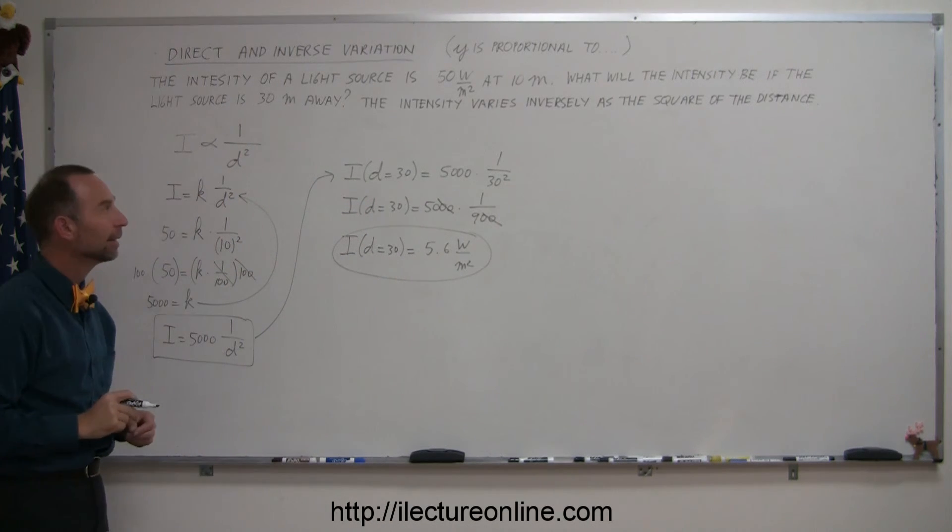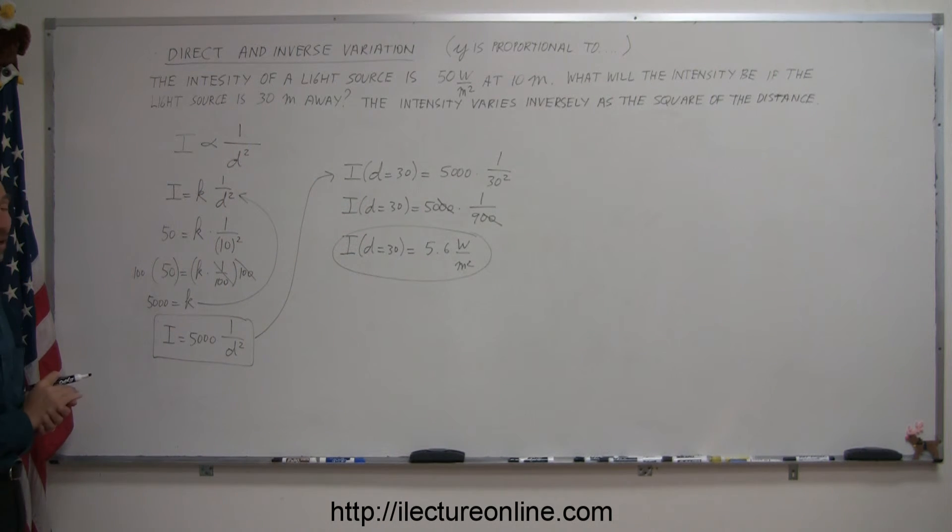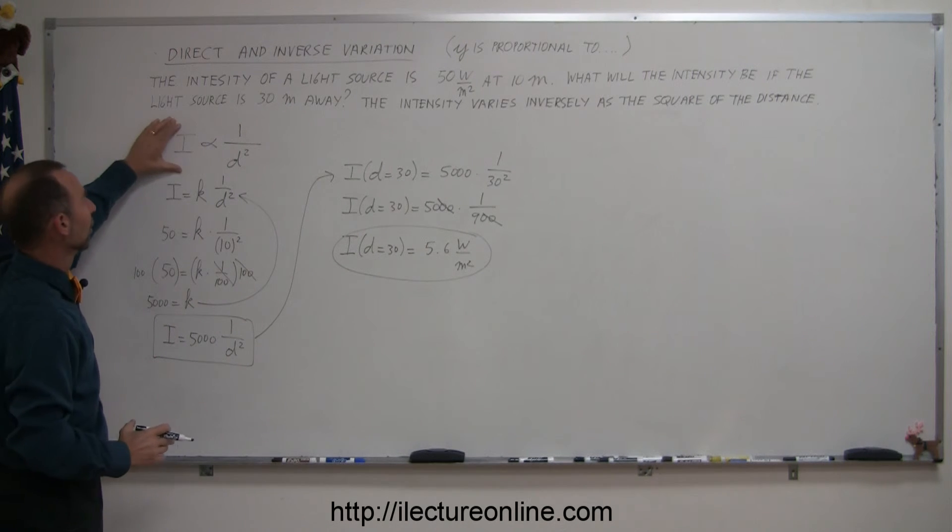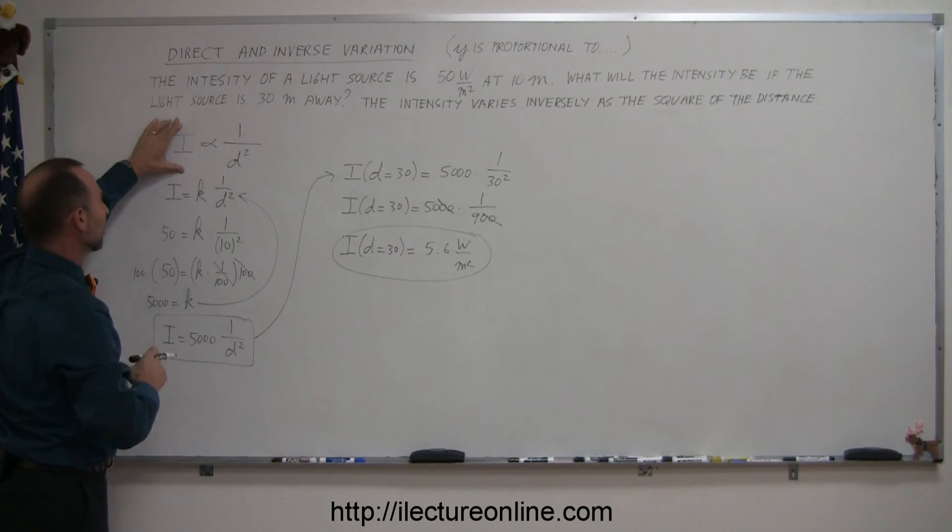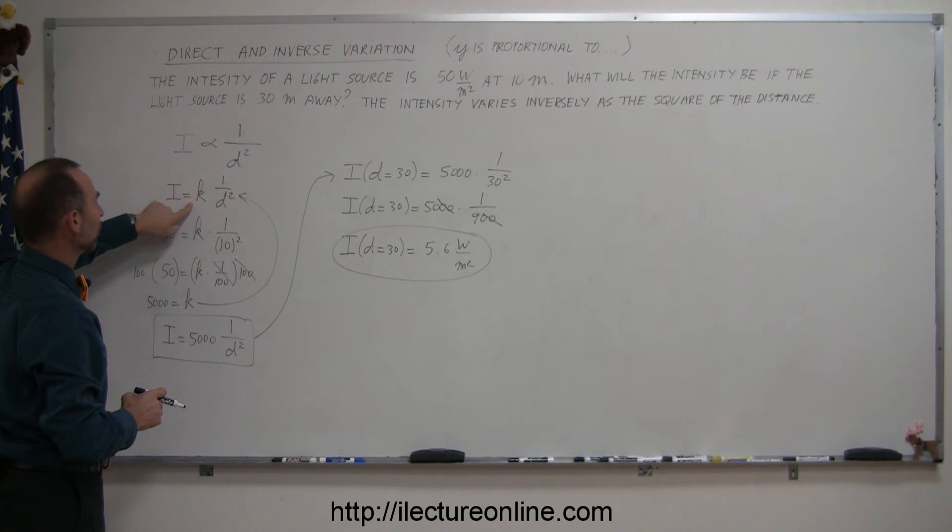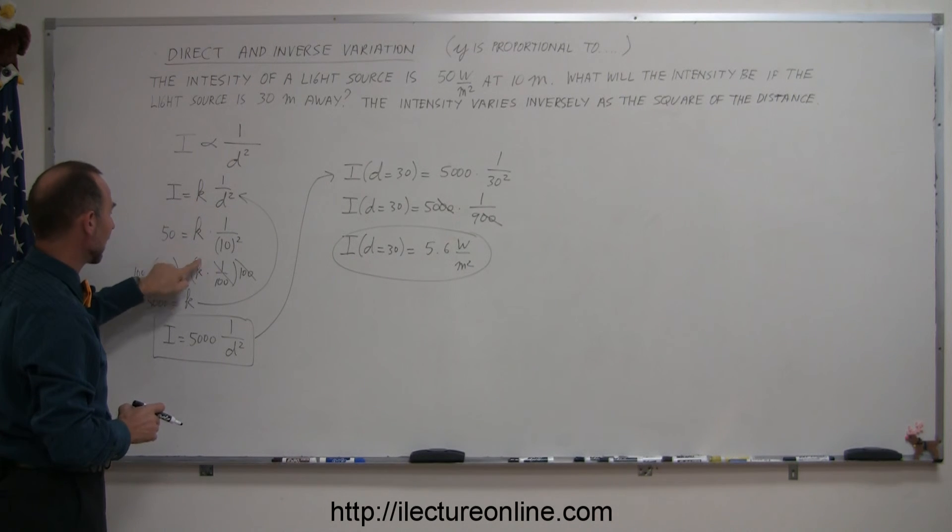There we go. And that's how you use that technique. It's actually quite elegant and quite simple. Again, following the direction, write down your proportionality as is indicated, then change that into an equation by introducing a proportionality constant k, then plug in the values for your variable so you can figure out what k is equal to.